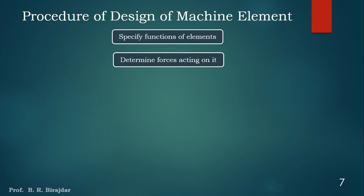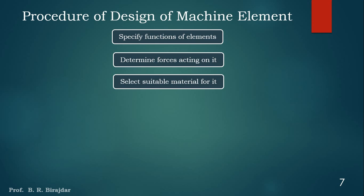The forces may be external or internal — we have to determine what different forces are acting on the element. Then the third step is to select a suitable material for that particular component. Four basic factors considered in selecting the material are: whether the material is available, what is the cost of that material, what are the mechanical properties of that material, and the different manufacturing considerations. These are the four important parameters to consider while selecting an appropriate material.